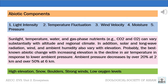While the specific weather experienced in a given mountainous region may vary depending on location and altitude, some characteristics of mountain climate are shared between regions. Looking into the abiotic components of the mountain ecosystem, we see that light intensity, temperature fluctuation, wind velocity, moisture, and pressure play a very important role. Sunlight, temperature, water, and gas phase nutrients such as carbon dioxide and oxygen can vary substantially with altitude and regional climate. In addition, solar and long wave radiation, wind, and ambient humidity also vary with elevation.